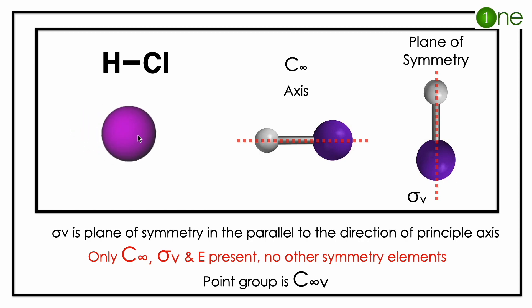It's a C infinity axis. In the same direction, you have the sigma v, which is a plane of symmetry. Since it is parallel to C infinity, it is called sigma v.